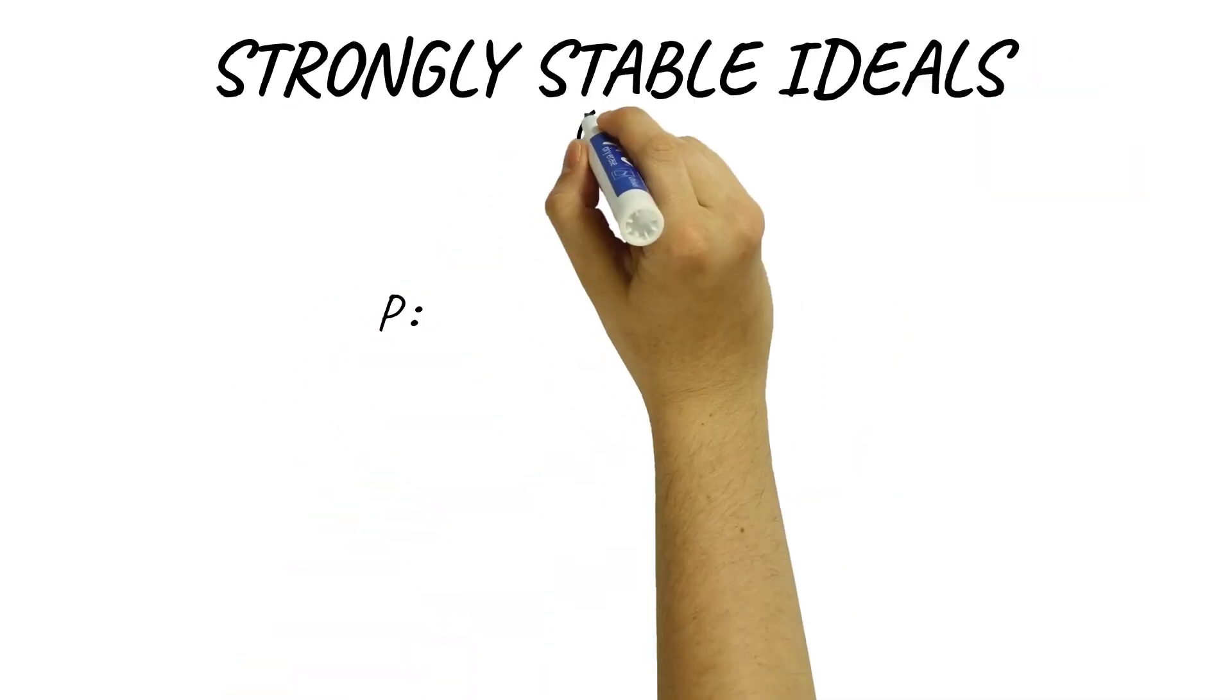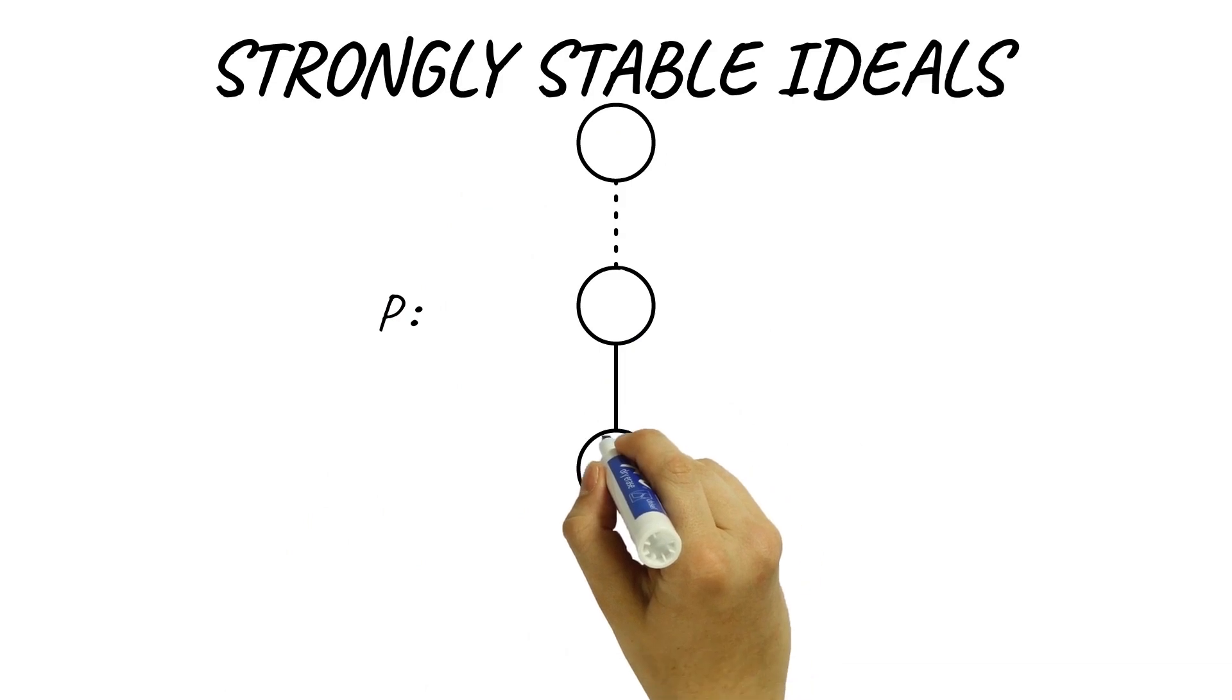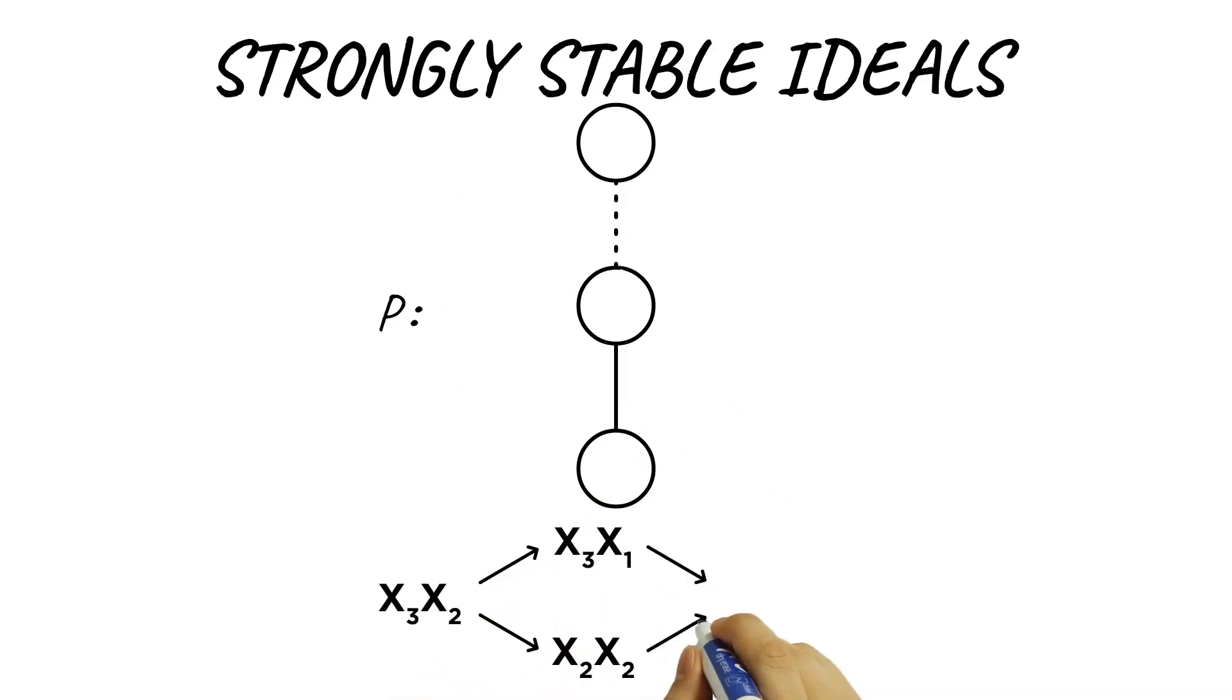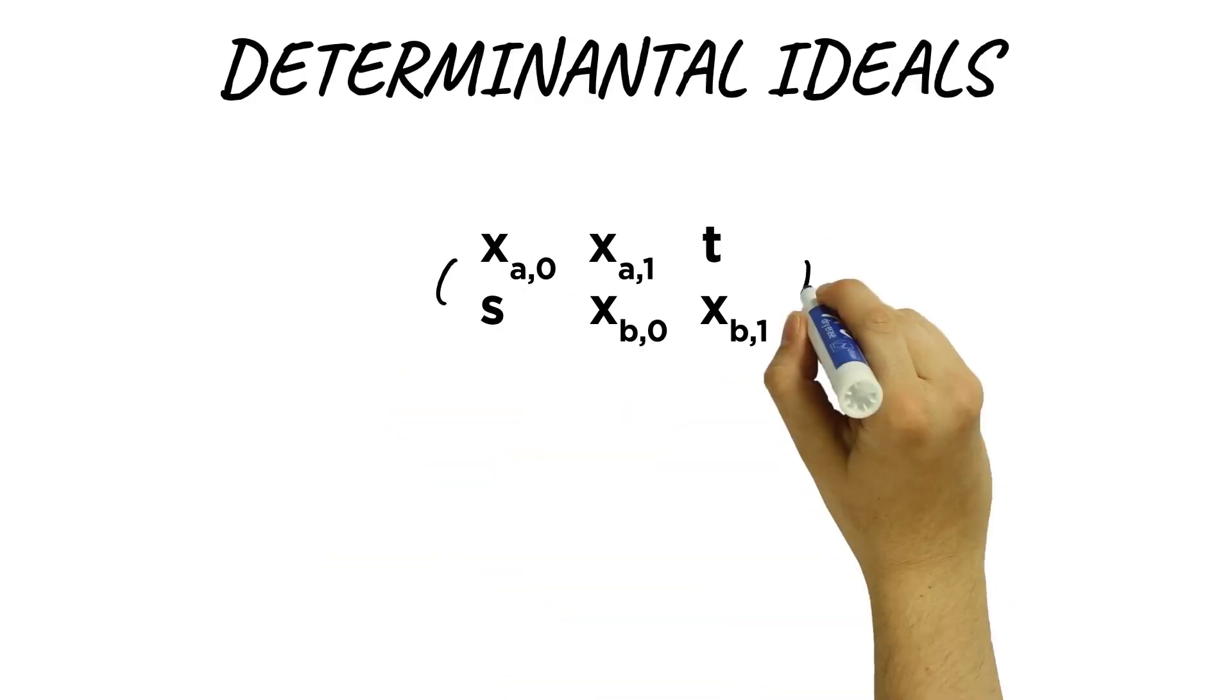When P is a ladder, the letterplace and co-letterplace ideals project to dual strongly stable ideals. Monomial ideals, in general, have no such duality.